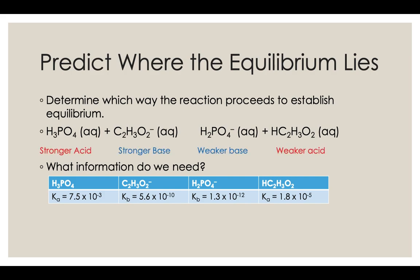When you look at the Ka value for phosphoric acid versus acetic acid, the Ka for phosphoric acid is a bigger number — 7.5×10⁻³ — compared to acetic acid's 1.8×10⁻⁵. That means H3PO4 ionizes more and is the stronger acid out of the two. Between the bases — the acetate ion and H2PO4⁻ — the acetate ion is the stronger base, with a Kb of 5.6×10⁻¹⁰ compared to 1.3×10⁻¹² for H2PO4⁻.